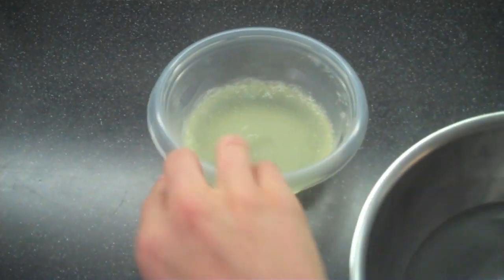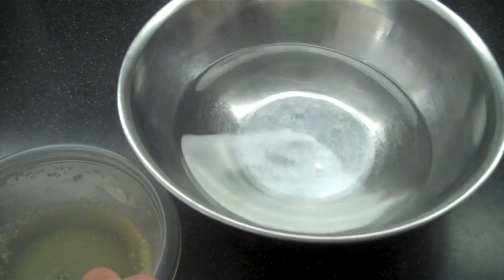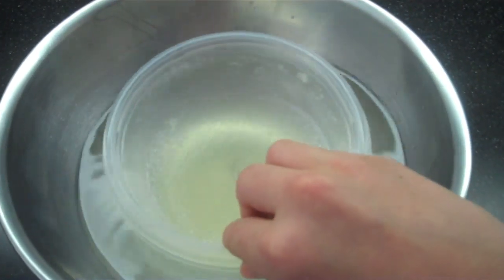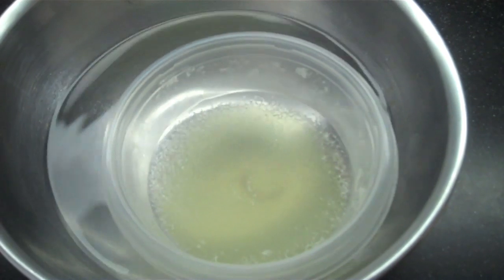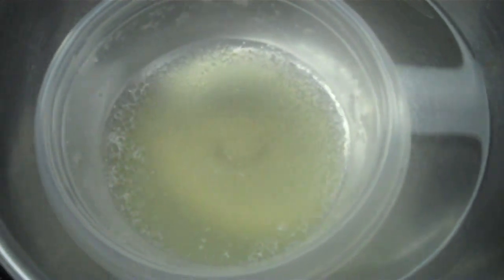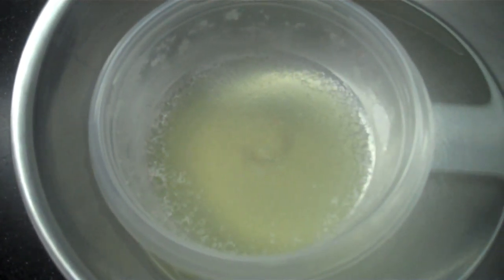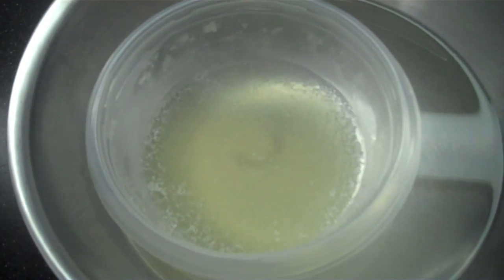Now we have to melt it and freeze it again. I'm using warm water to melt it. You can use a stove or any method you like, as long as you melt it and freeze it again. I'm going to let that sit for a while and let it become a liquid.